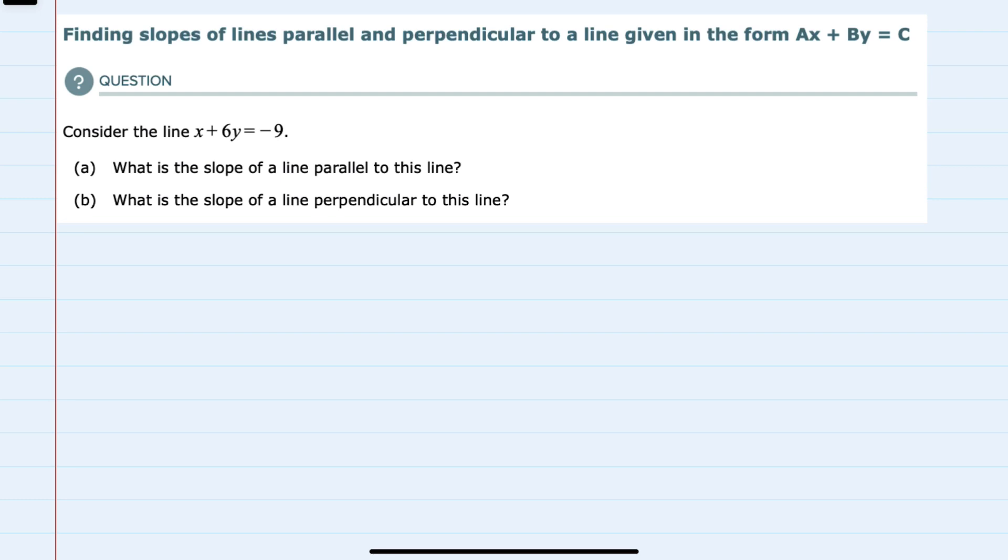And to find these slopes, I'll have to start by finding the slope of the line that we're given. And to do so, I'll put it in slope intercept form, y equals mx plus b, because I can look at the coefficient in front of x to determine what the slope is.